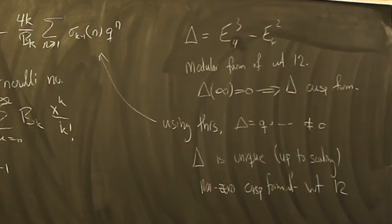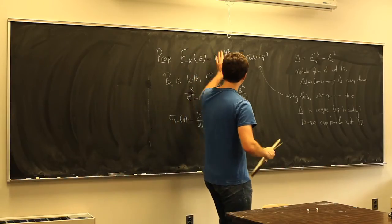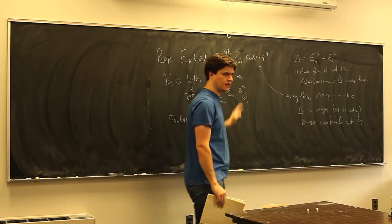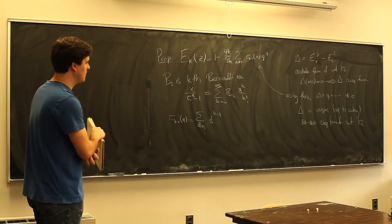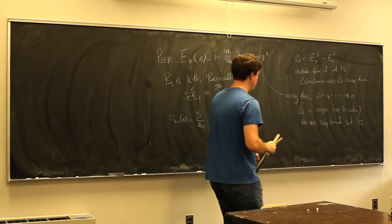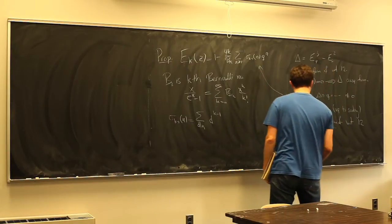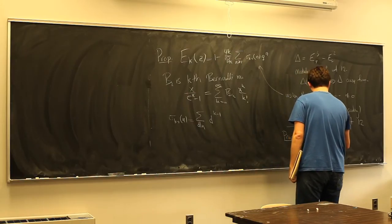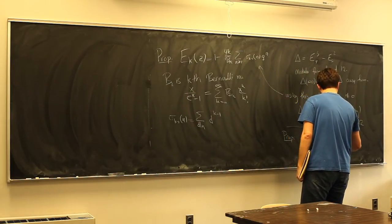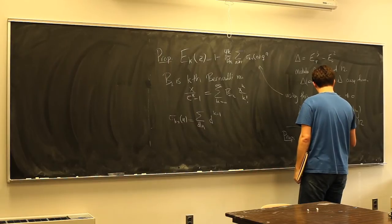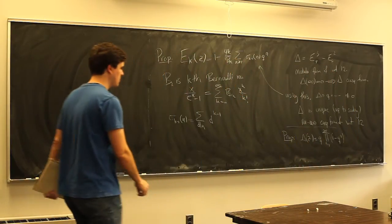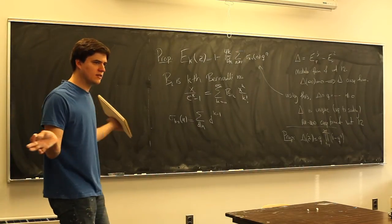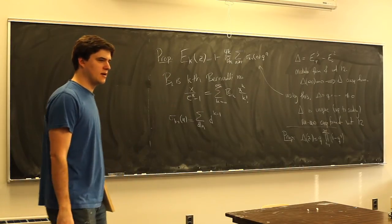The q-expansion of Δ has no constant term, and the other coefficients are called Ramanujan's tau function — there's no nice closed form for them, just a complicated series. But there is a nice product formula due to Jacobi: Δ = q · ∏_{n≥1} (1 - q^n)^{24}. You can expand this product to get the q-expansion, though it's a complicated computation.